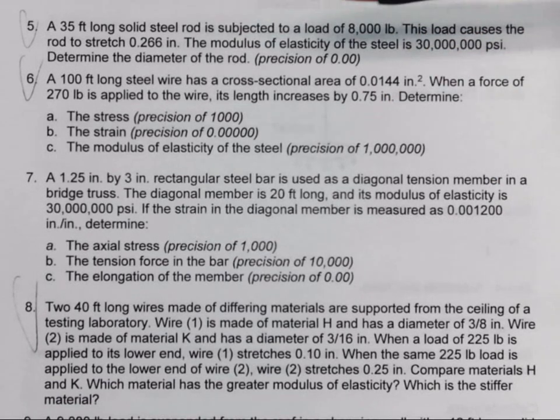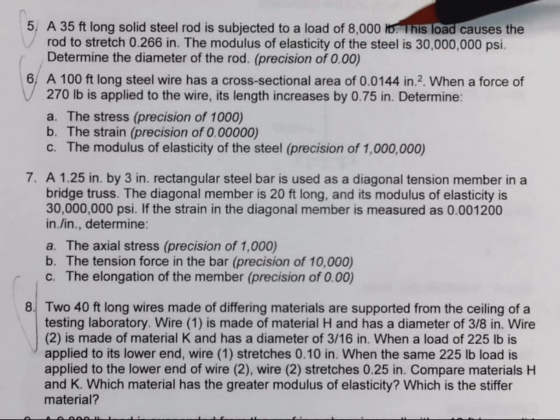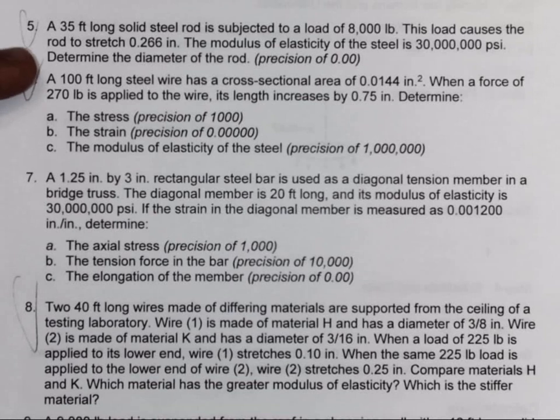We've got a 35 foot long steel rod subjected to a load of 8,000 pounds. The load causes the rod to stretch by 0.266 inches. The modulus of elasticity of steel is 30 million PSI. Determine the diameter of the rod, and we're going to go down to the hundredth of an inch on our precision.